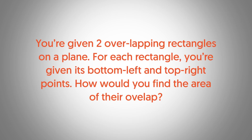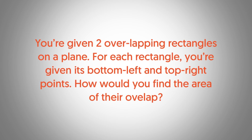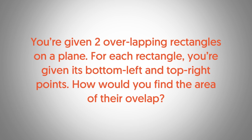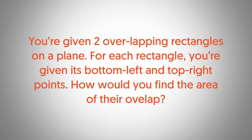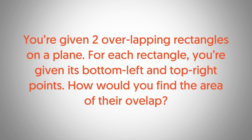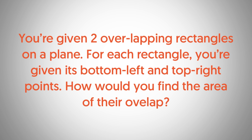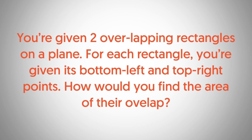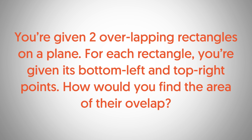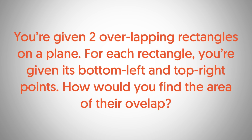Here's today's problem: you're given two overlapping rectangles on a plane. For each rectangle you are given its bottom-left and top-right points, and you have to find the area of the overlap of the two rectangles. How would you do it? I already have the inputs on the whiteboard.